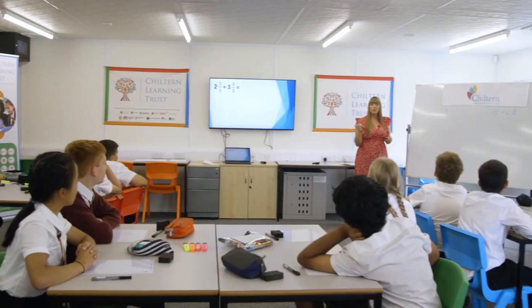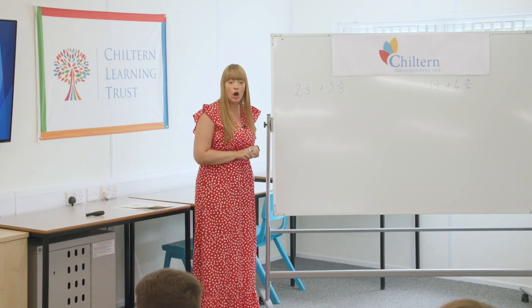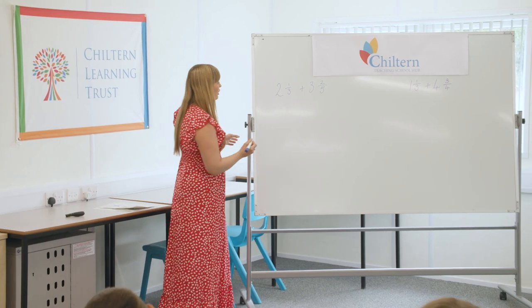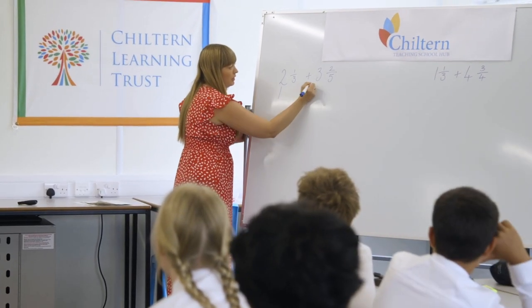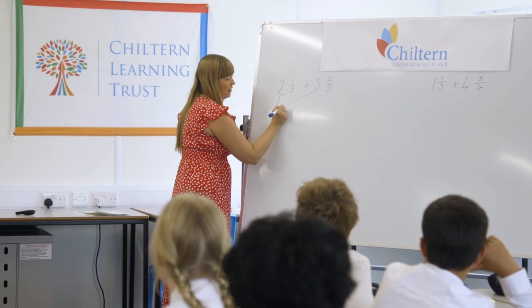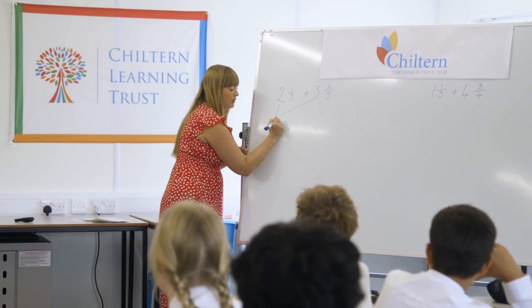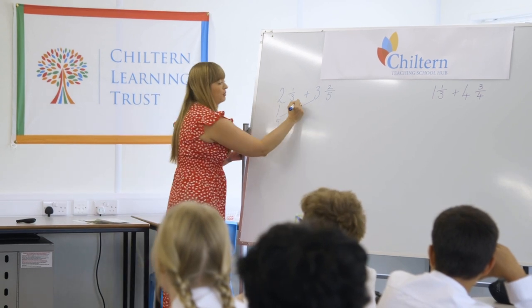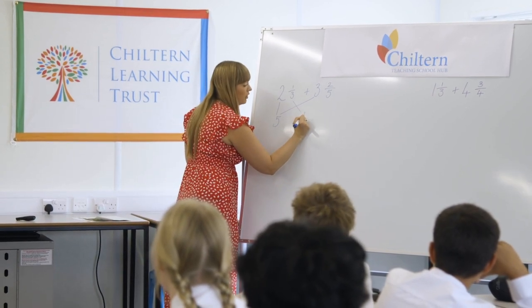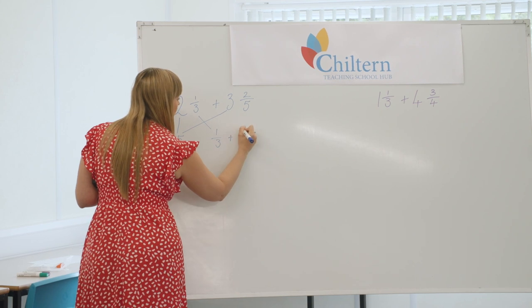Here I've got my example and what I'm going to do is partition the wholes and the fractions. The first step is to bring my two and my three over here — two add three is obviously five, nice and simple. Then I would bring my fractions over here, so I've got a third add two over five.